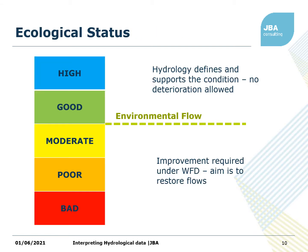So what do we mean by ecological status? There are five categories from high down to bad. For good and high status river reaches, the hydrology defines and supports the condition, and the Water Framework Directive says no deterioration is allowed. If the condition is moderate, poor or bad, an improvement is required. The aim from a hydrological perspective is to restore flows to the level required to support good ecology — this is where the idea of the environmental flow comes in. If the flow in the river is above the environmental flow, then in terms of hydrology, conditions are good enough that the ecology should be in high or good condition.